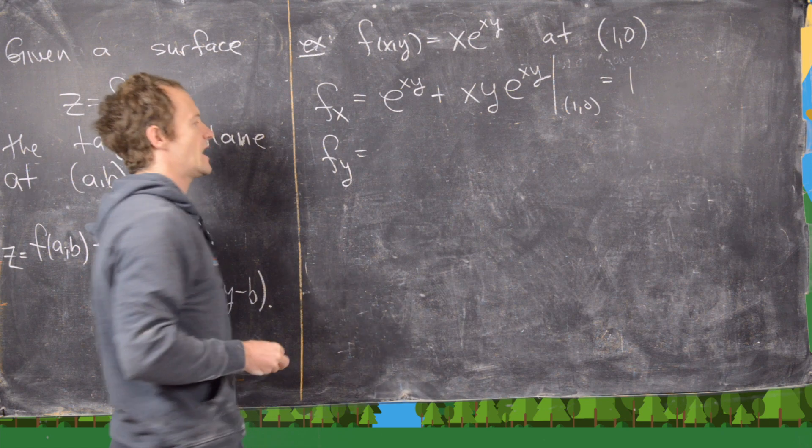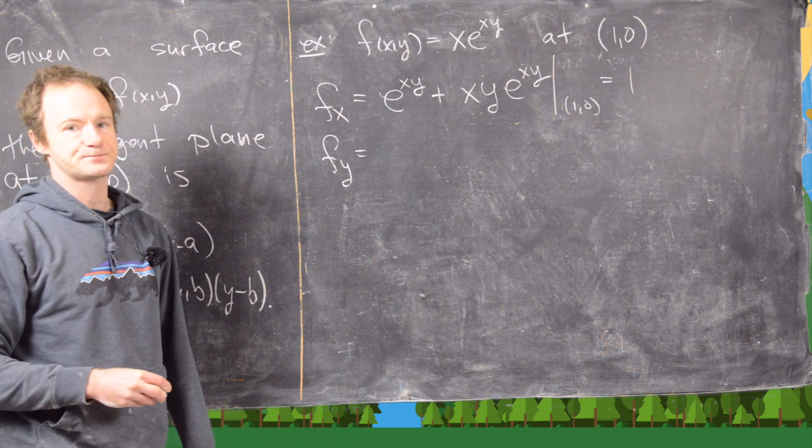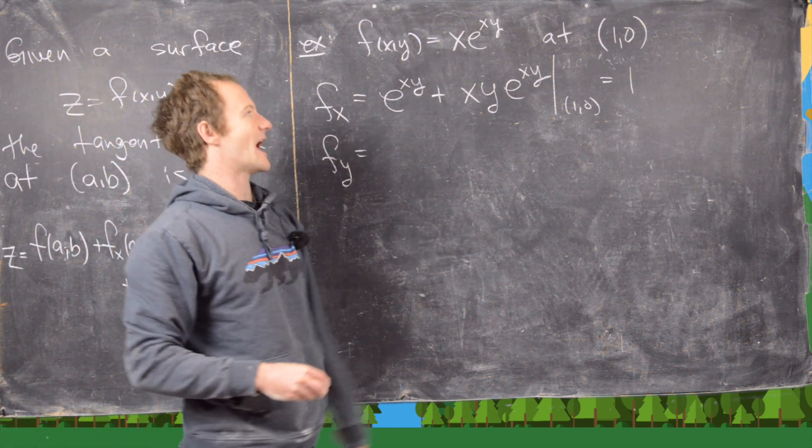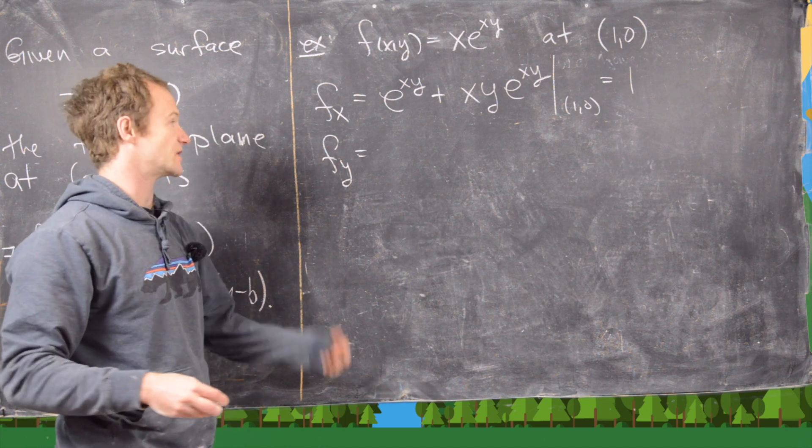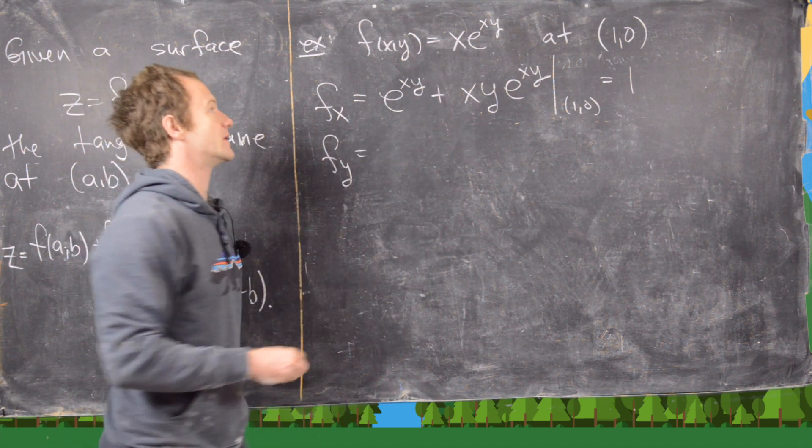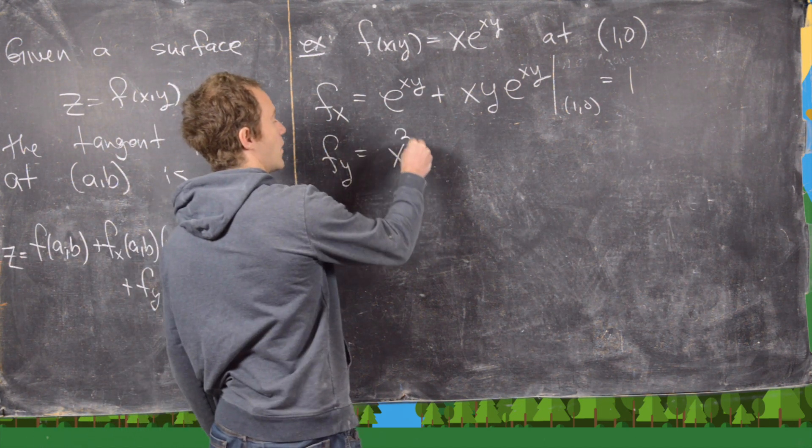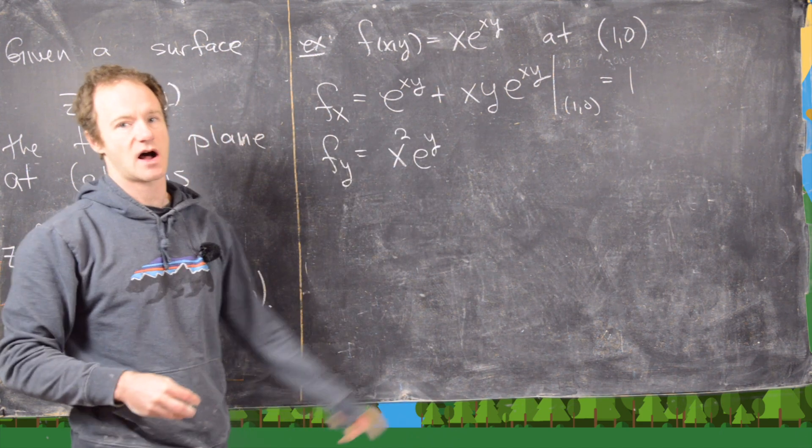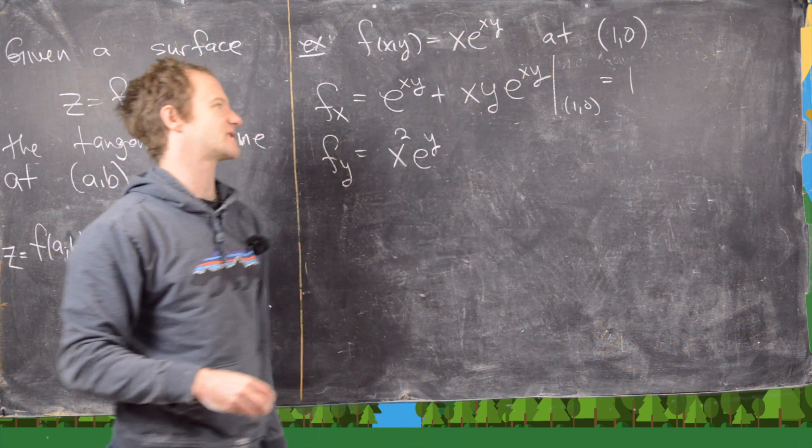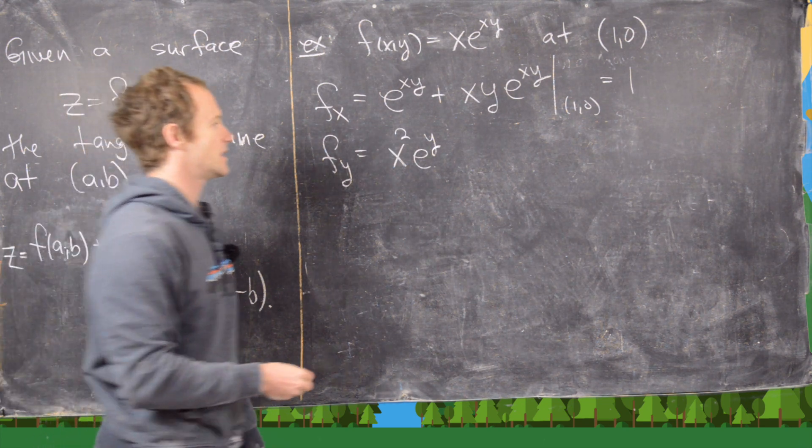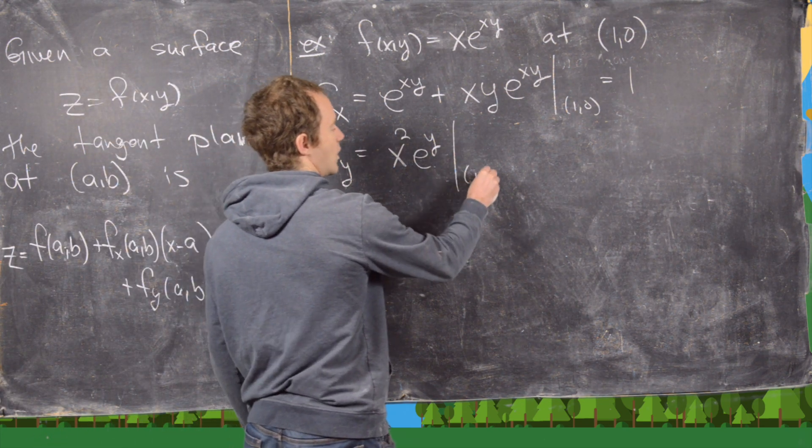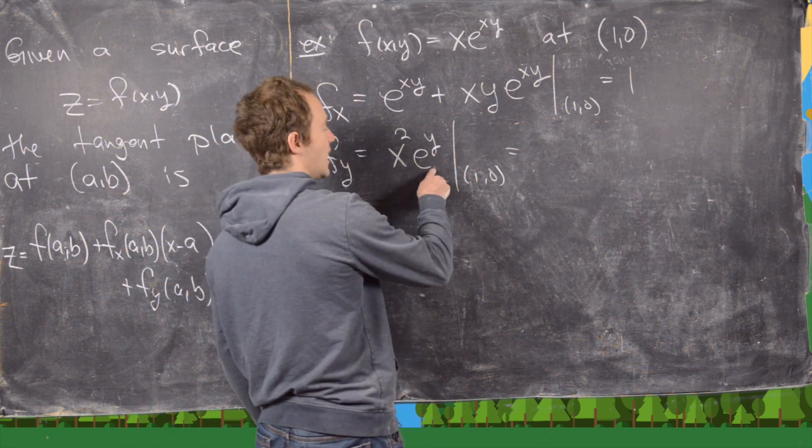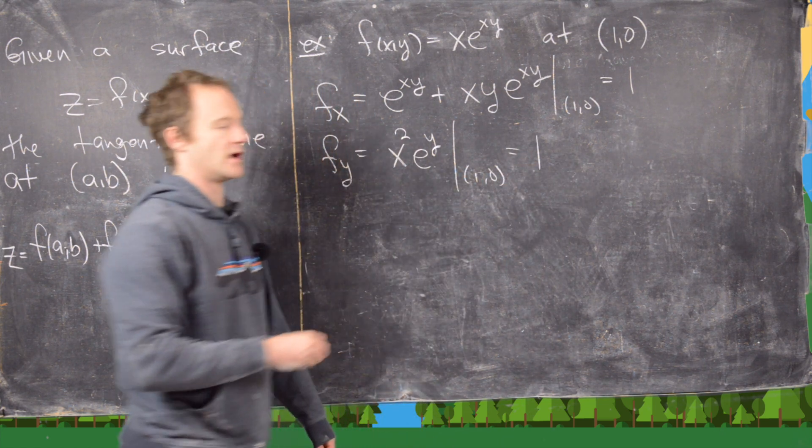Now let's look at f sub y, the partial with respect to y. Here all the x's are constants, so this is actually a bit shorter. That's going to give us x squared times e to the xy. Again, x is a constant, so when we do the chain rule the x comes down. Now we evaluate this at (1,0), and we get 1 times e to the 0, which is 1.